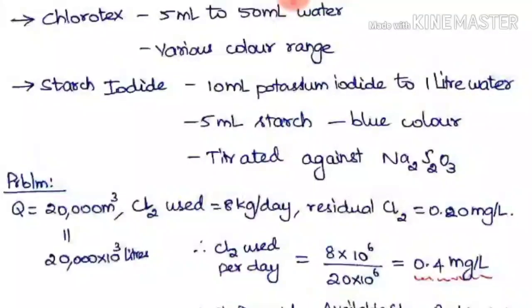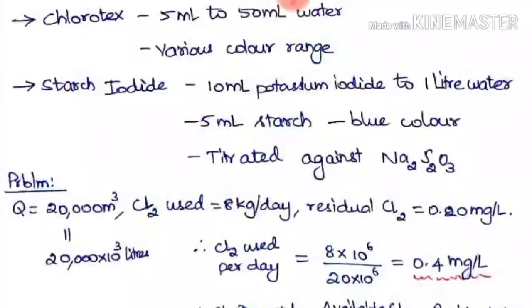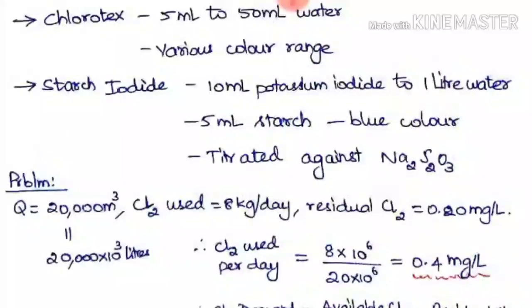The starch-iodide test is the one normally used in the laboratory. 10 mL of potassium iodide added to 1 liter of water is used, then 5 mL of starch is added so that a blue color appears. When titrated against sodium thiosulphate you get the end point, and from that reading you can find the amount of chlorine present.